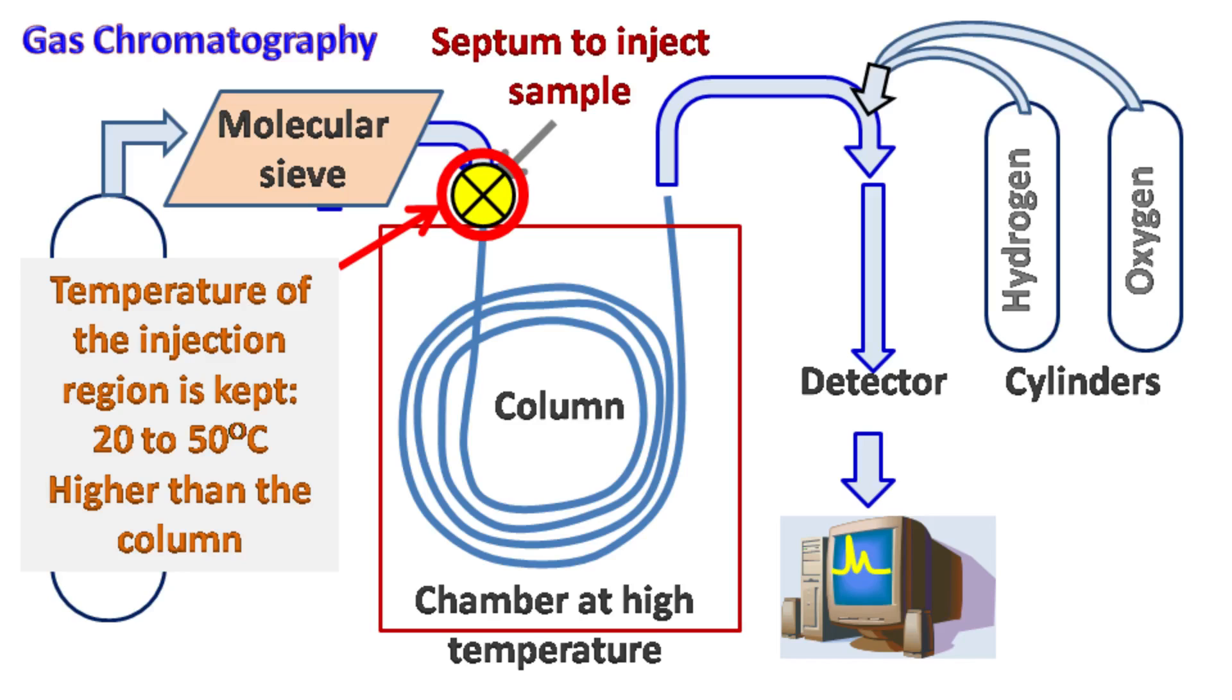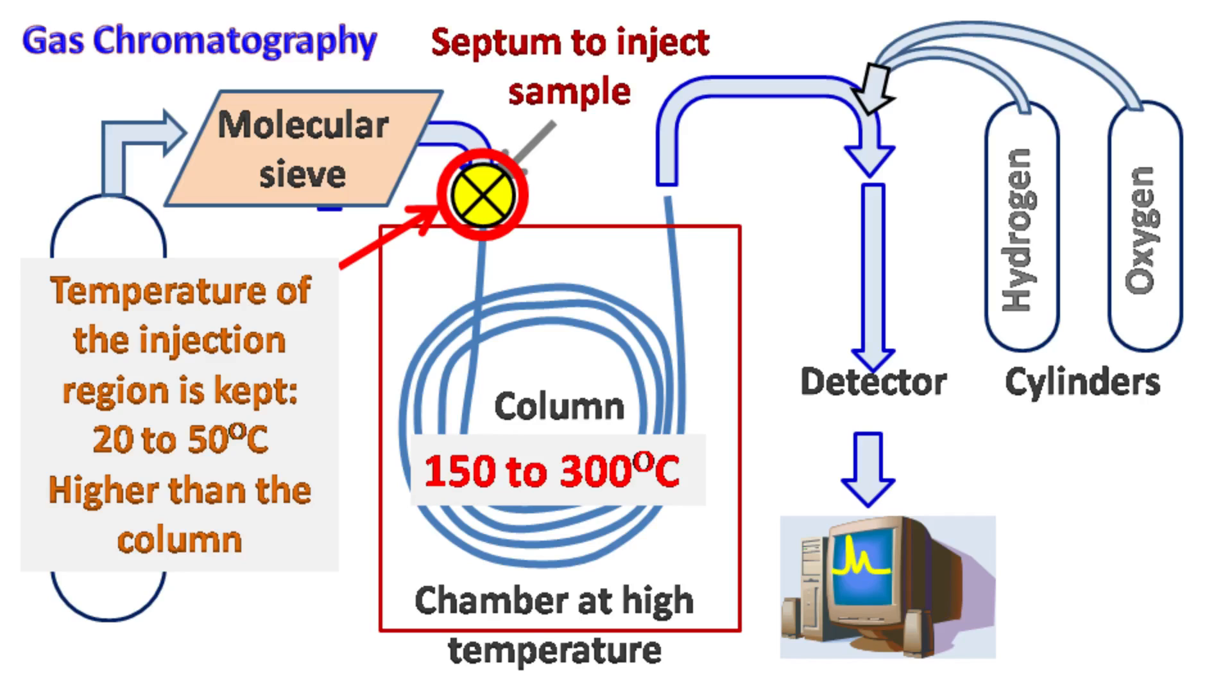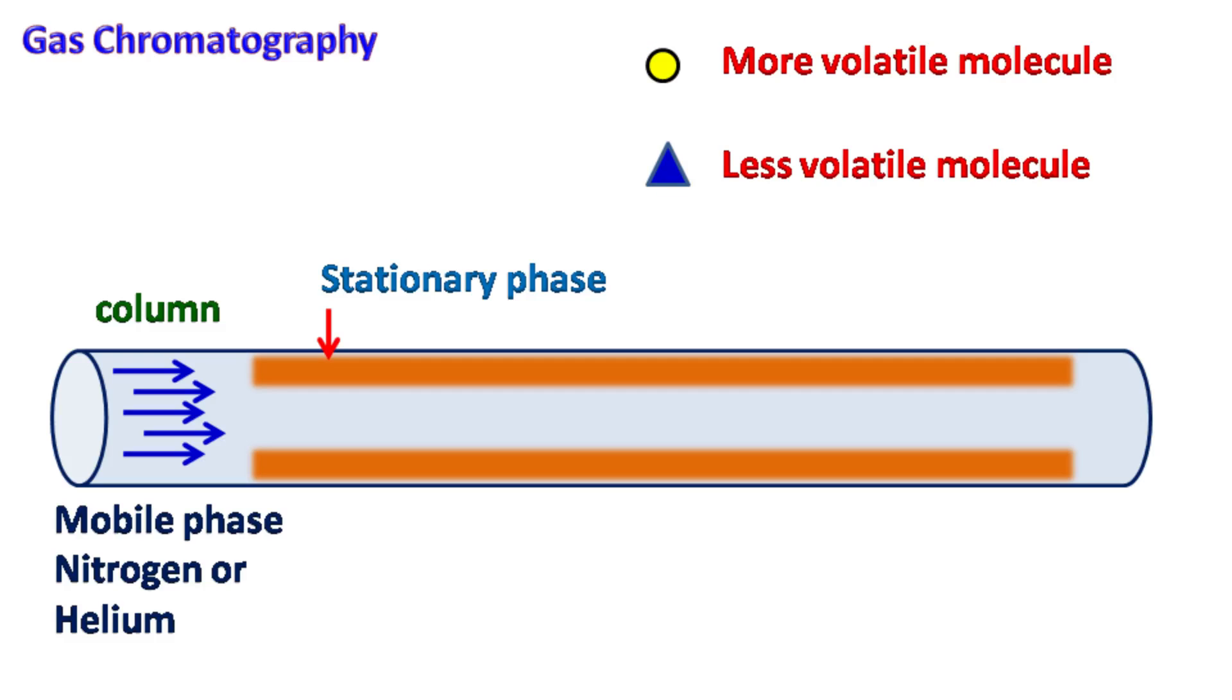During analysis, the temperature of the column is kept between 150 to 300 degrees Celsius. Separation occurs based on the interaction of molecules between the mobile phase and the stationary phase. The less volatile molecules interact more with the mobile phase and move fast down the column. Once the separation is completed, the detection is done with a detector attached at the end of the column.